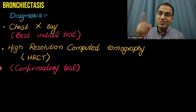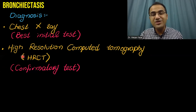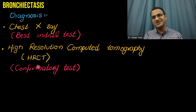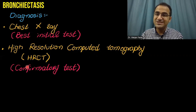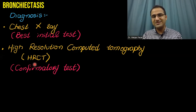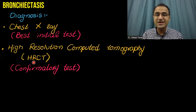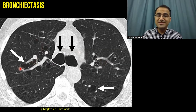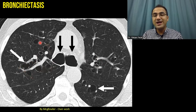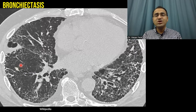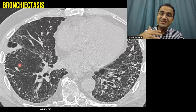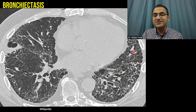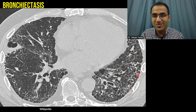The most specific and confirmatory test for bronchiectasis is high-resolution computed tomography — HRCT of the chest. HRCT is the most diagnostic for bronchiectasis: best initial test is chest X-ray, and the most specific and confirmatory test is HRCT. This picture shows dilated bronchi and bronchioles on HRCT. In later stages, excessive destruction of bronchioles leads to a honeycomb appearance of the lungs.